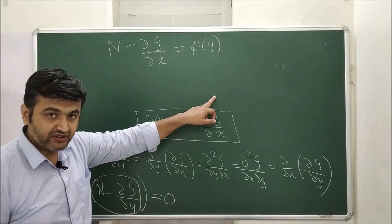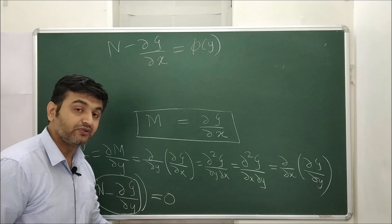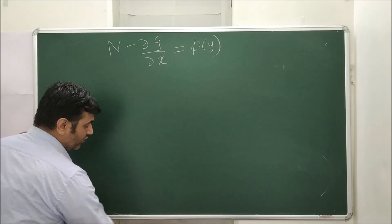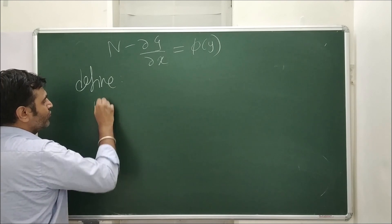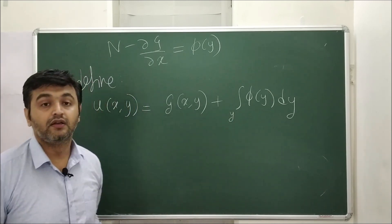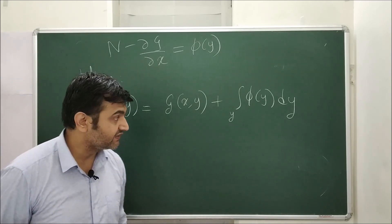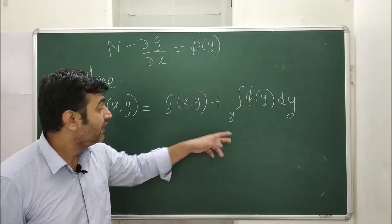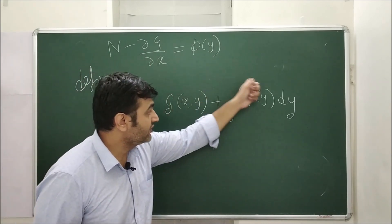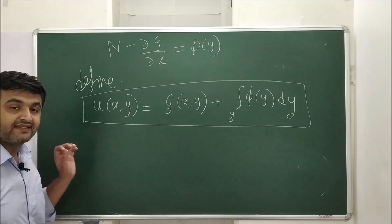So we constructed g by integrating M, and we constructed φ(y) using the given condition. These two are sufficient to define our function u. Define u(x, y) = g(x, y) + ∫φ(y) dy. This makes sense: g is continuous (integral of a continuous function), and φ(y) is a function of y so we can integrate with respect to y. Therefore defining this u makes sense and the integral exists.